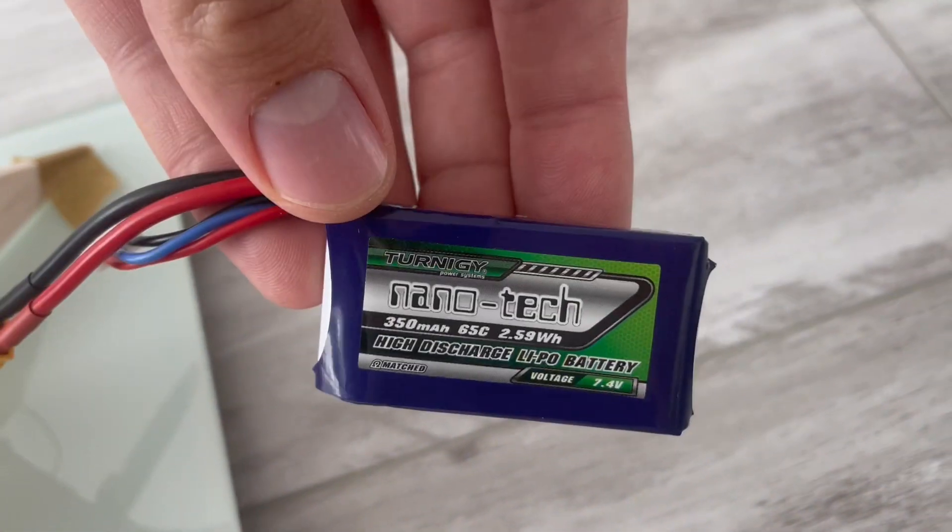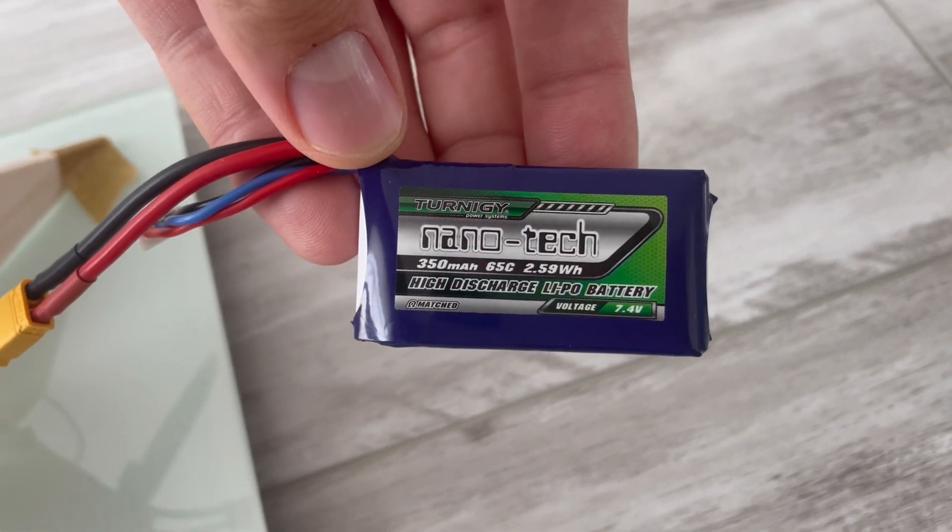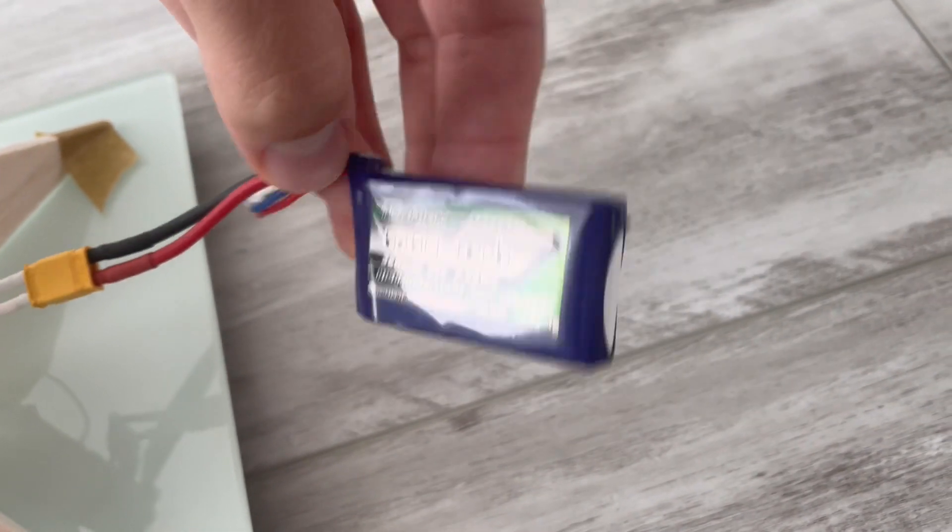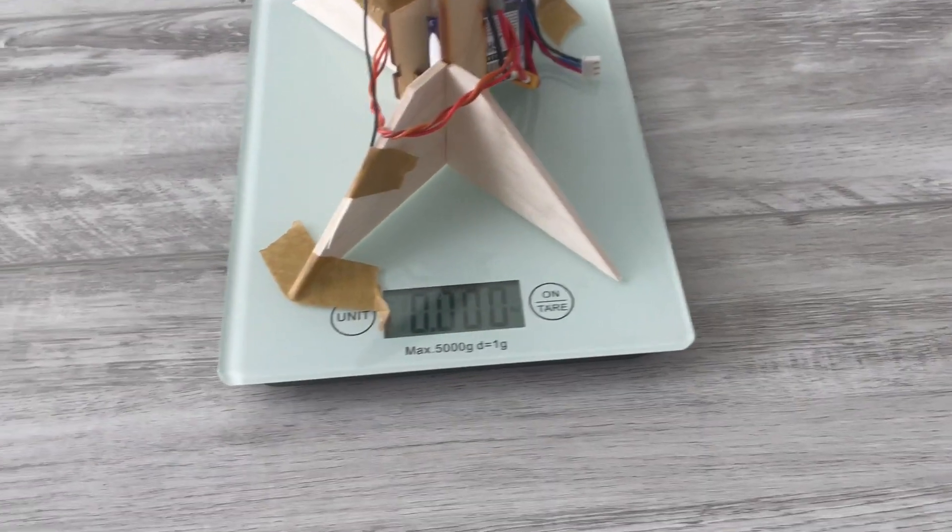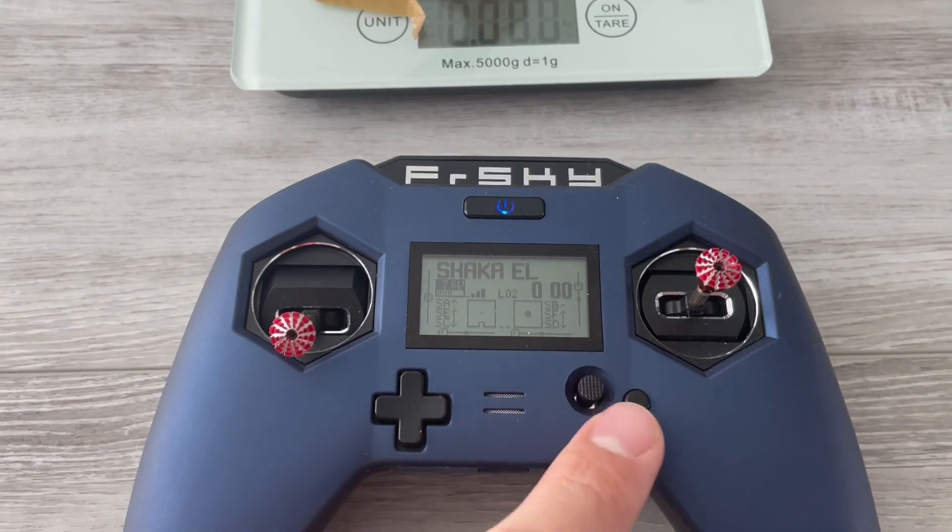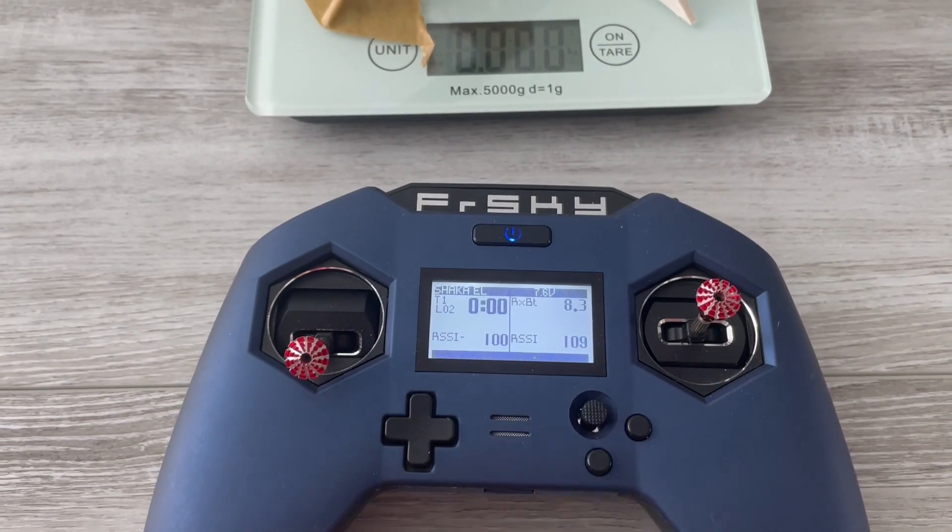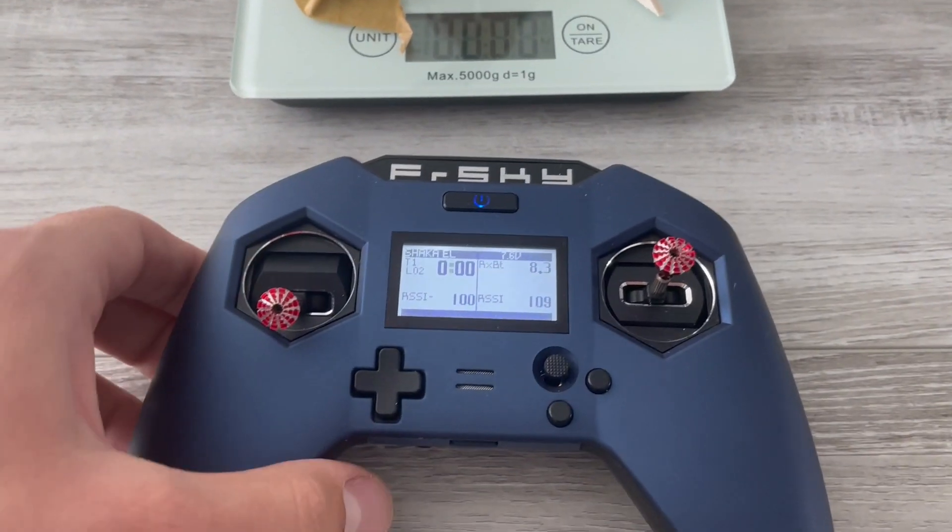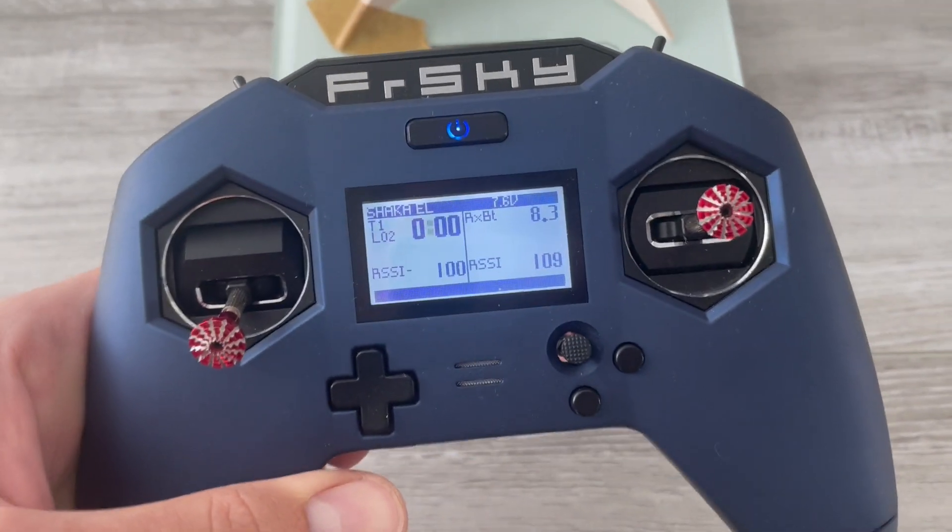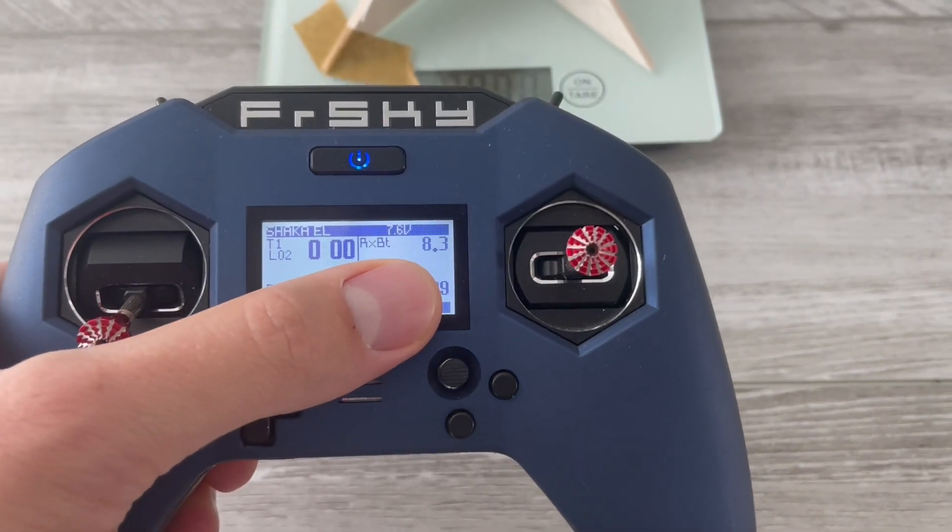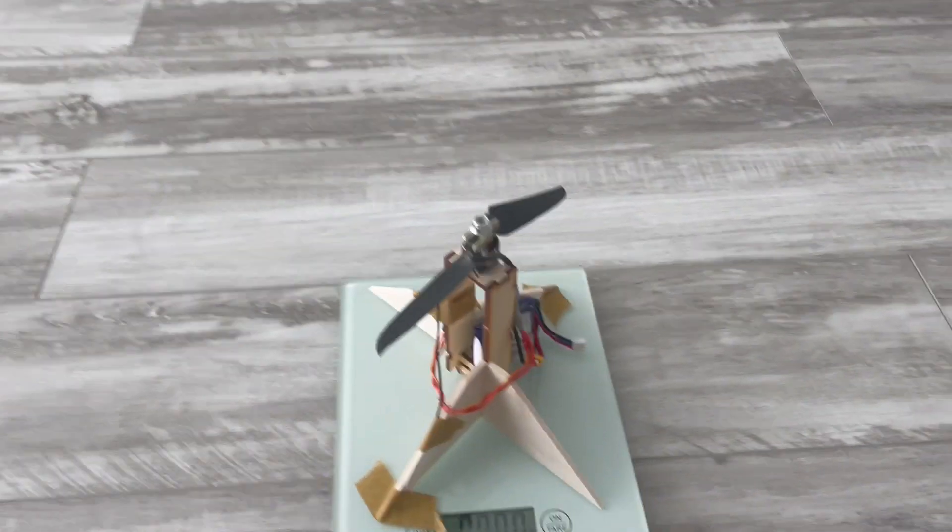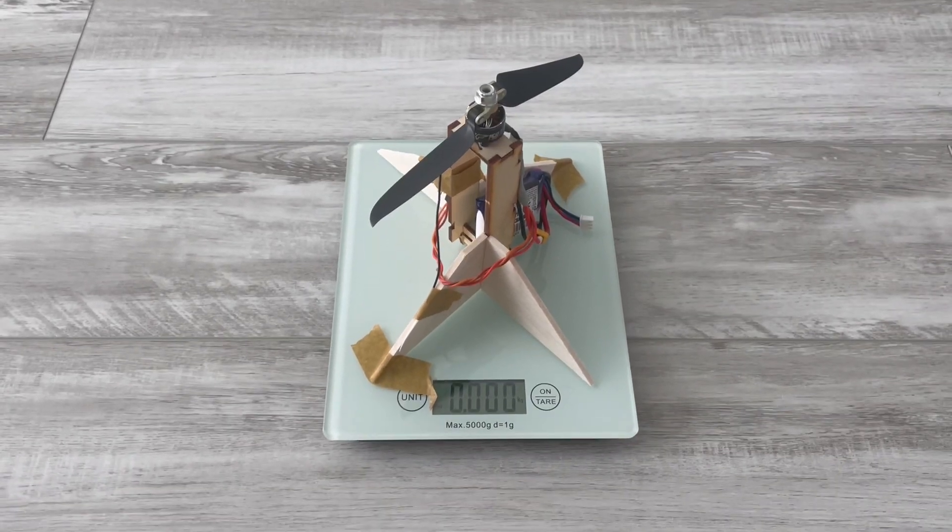So we're going to be testing this with a Nanotech 350mAh 65C 2S battery. It's fully charged. Let me show you the telemetry screen because we have the voltage of the battery feeding through the receiver so we can see that the RX battery is fully charged at 8.3 volts. Now let's see how much thrust we get.